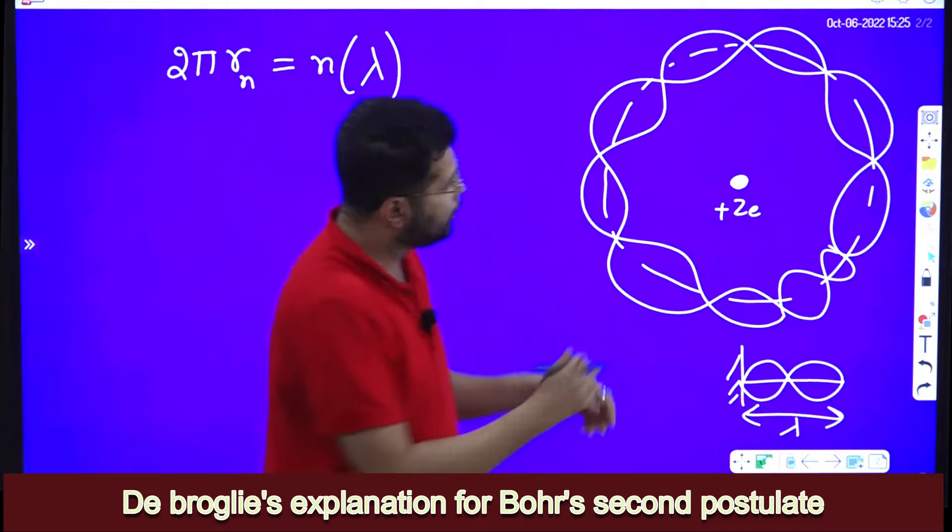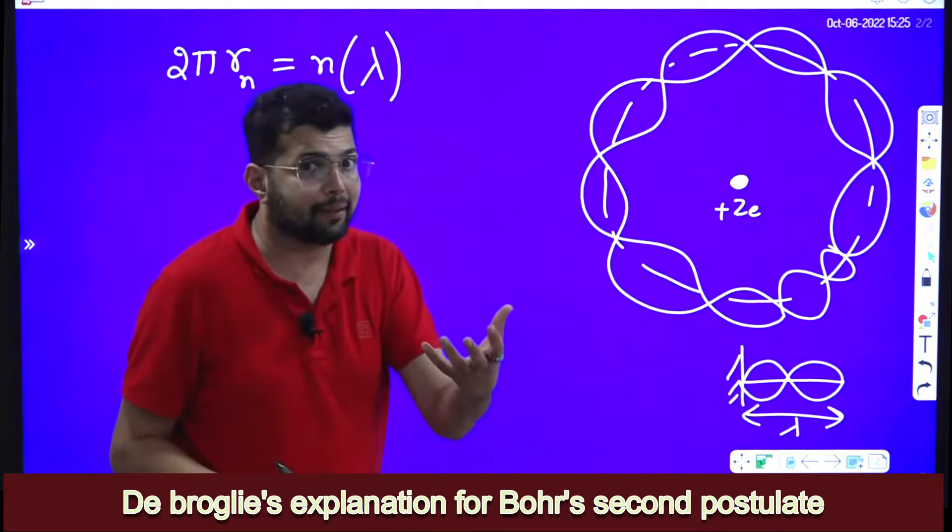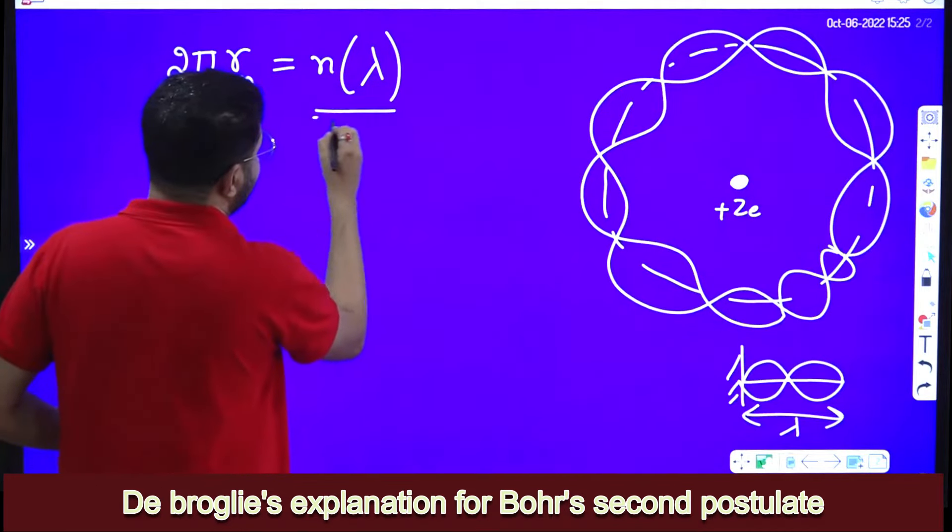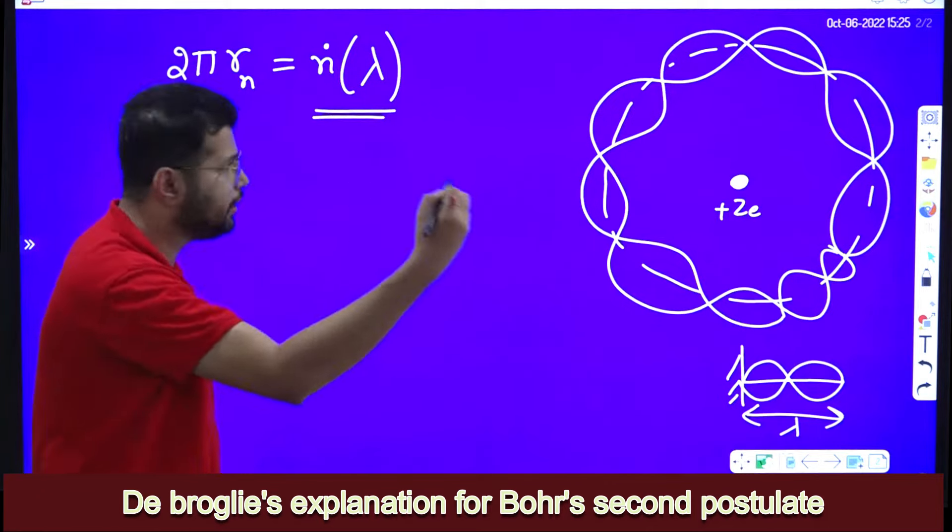So what he tells is, electron is revolving around the nucleus forming a standing wave pattern, length of which should be integral multiple of lambda. Here he takes the hint.